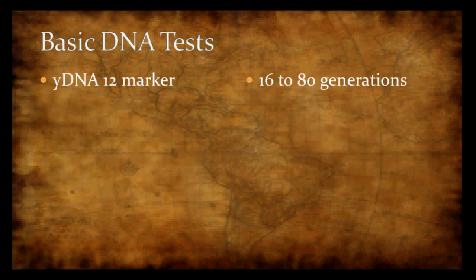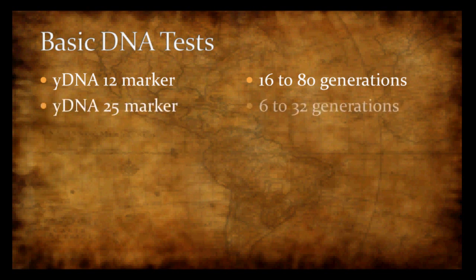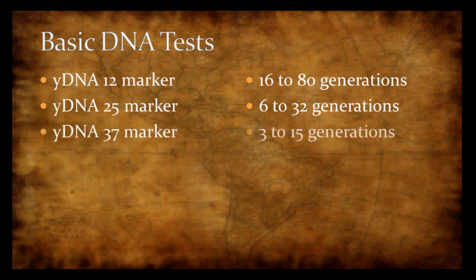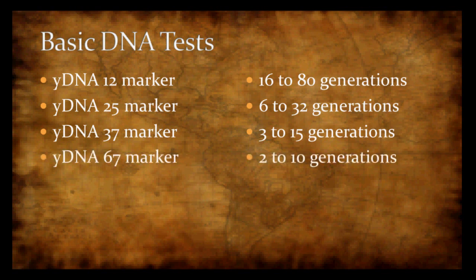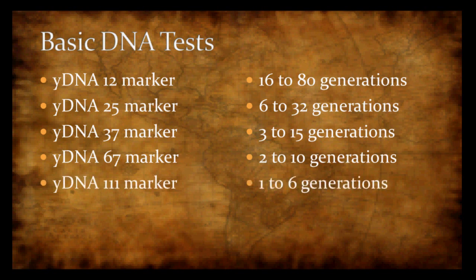Looking at other tests: the 25-marker test gets you 6 to 32 generations, the 37-marker test gives 3 to 15 generations, the 67-marker test gets between 2 and 10, and if you go all the way to the 111-marker test, you can get between 1 and 6 generations back in time.